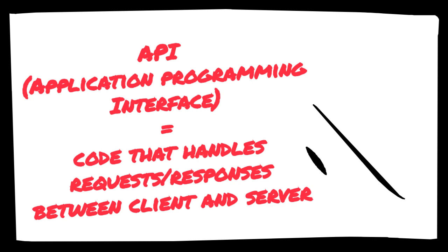An API, or Application Programming Interface, is simply a bit of code that handles the requests and responses between a client and server.